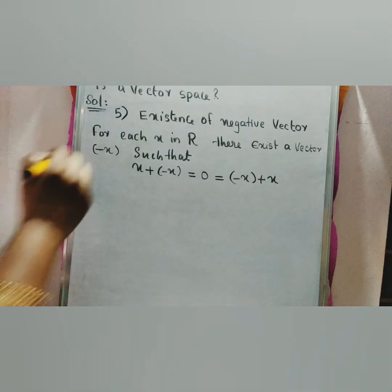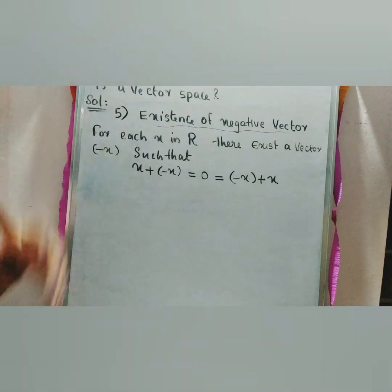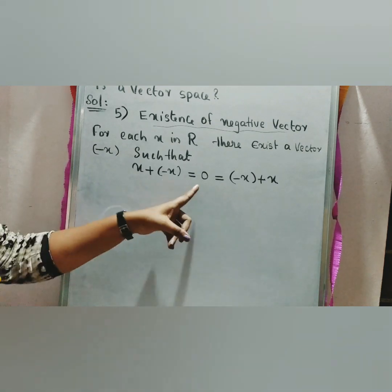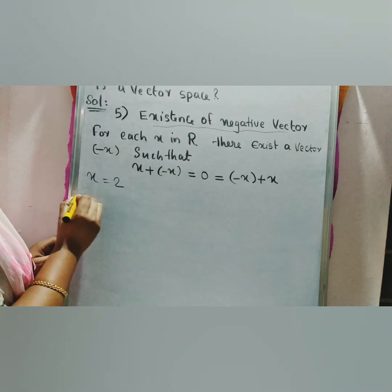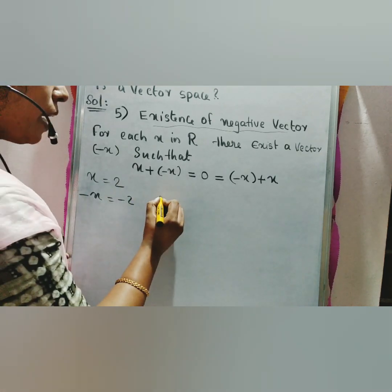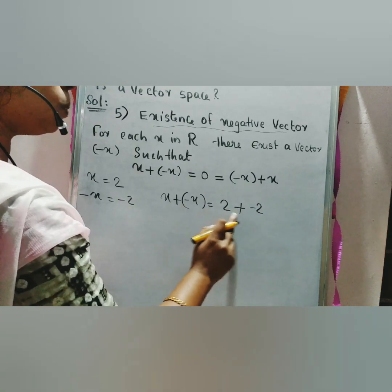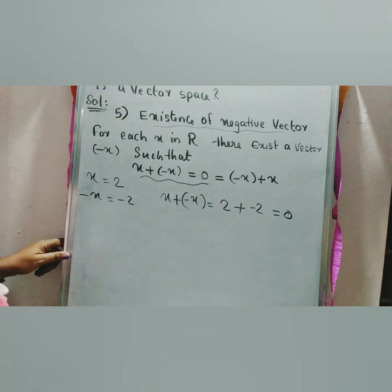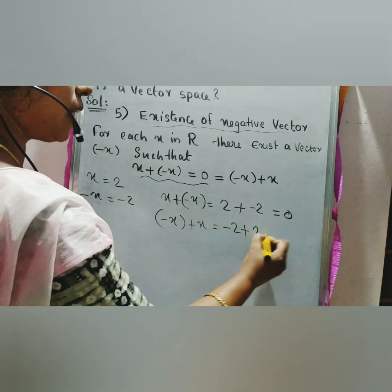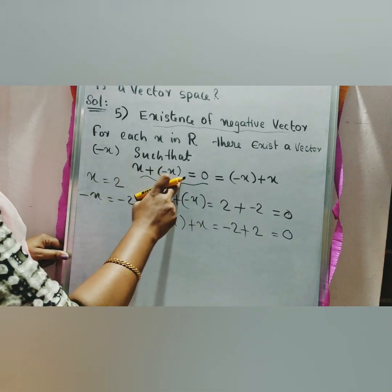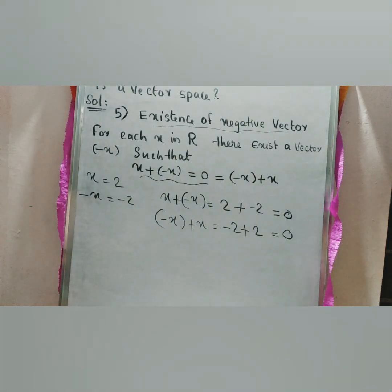Fifth property — existence of negative vector: for each x in R, there exists a vector minus x such that x plus (minus x) equals 0 equals minus x plus x. For example, if x equals 2, then minus x equals minus 2. Then 2 plus (minus 2) equals 0, and minus 2 plus 2 equals 0. This satisfies the fifth property — existence of the negative vector.